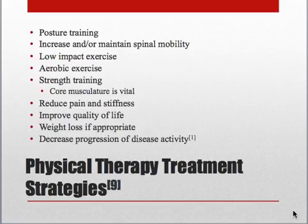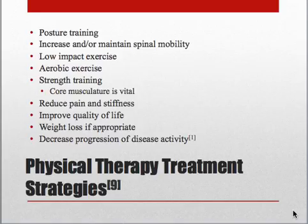Strategies for physical therapy treatment include posture training, increasing and maintaining spinal mobility, low-impact exercise, and aerobic exercise. Strength training — essentially core musculature strengthening — is very important for this patient and can help reduce pain and stiffness in the spine and improve quality of life. If the patient is obese, weight loss may be considered as an option to help decrease the progression of disease activity.